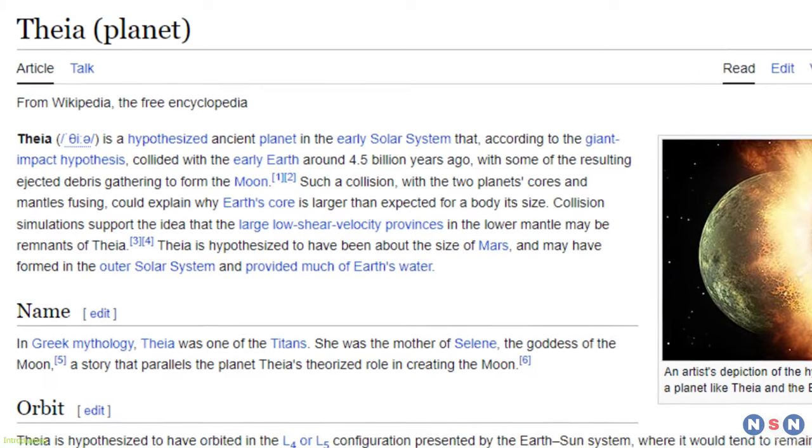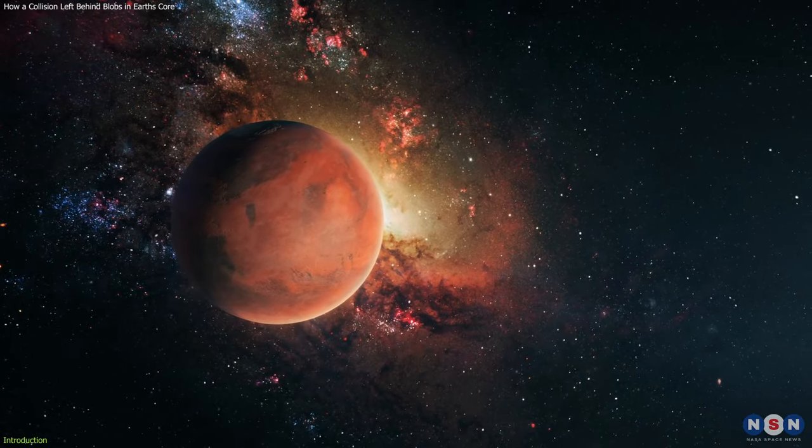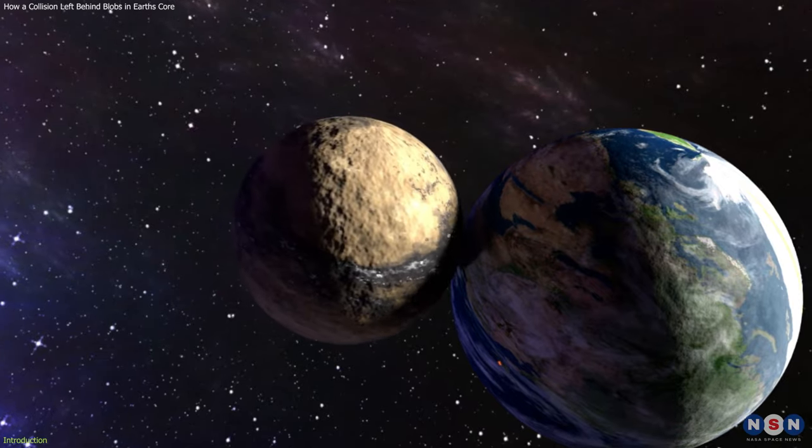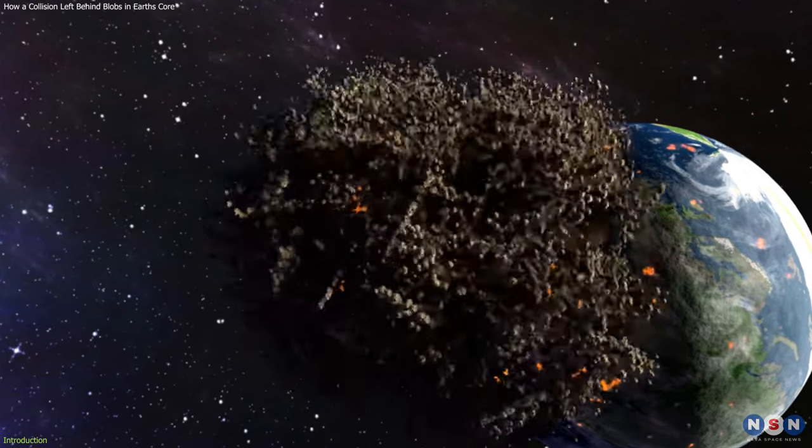This object is called Theia, and it was roughly the size of Mars. The impact was so powerful that it blasted a huge amount of material into orbit, which eventually coalesced into the Moon.